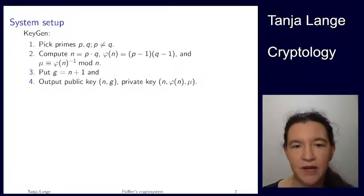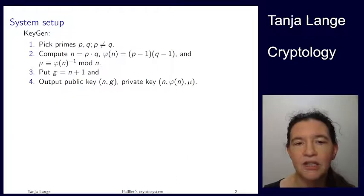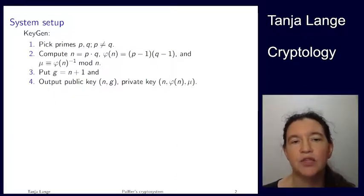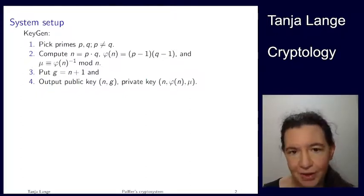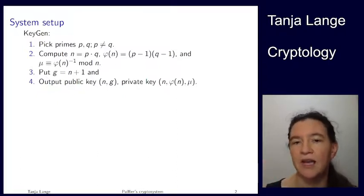And then finally we're putting g equals n + 1. Now this seems a bit of redundant information, that is correct. So if everybody uses this same g, your public key just needs to be n. But there are some generalizations where you're picking random g's with certain properties, which these properties are satisfied by n + 1. And so for compatibility you should have the g as well. So the public key is this (n, g), and the private key is (n, φ(n), μ).